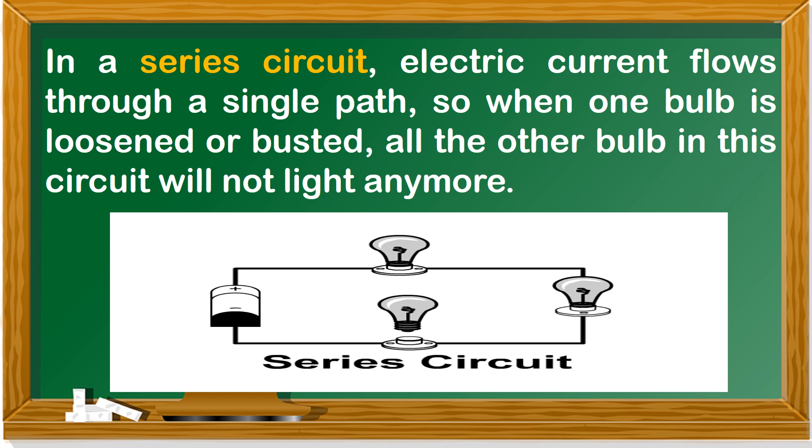In a series circuit, electric current flows through a single path. So, when one bulb is loosened or busted, all the other bulbs in this circuit will not light anymore. The loosened or busted bulb breaks or opens the pathway so electricity cannot flow through.